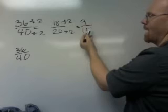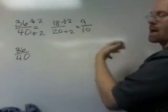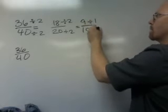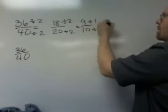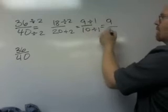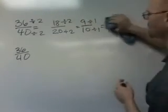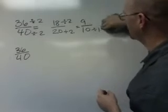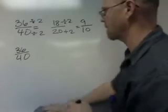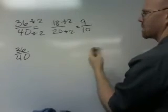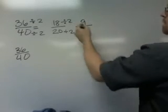9 tenths, neither of these numbers can be divided by something other than 1. And if you divide by 1, 9 divided by 1 is 9 and 10 divided by 1 is 10. So you're done. Once you get to the point where both numbers are relatively prime, so you can't divide them by something other than 1, that means you're done.